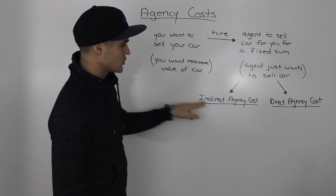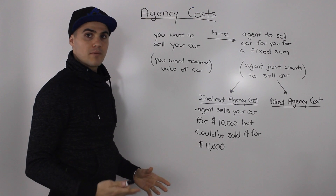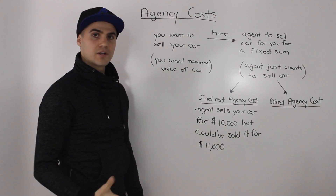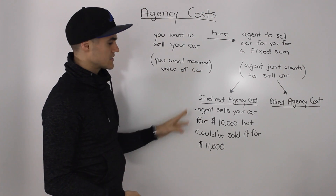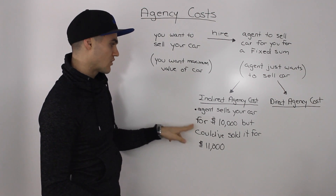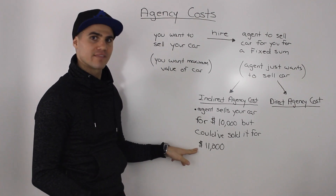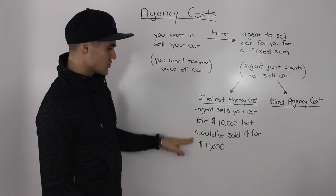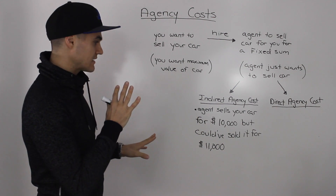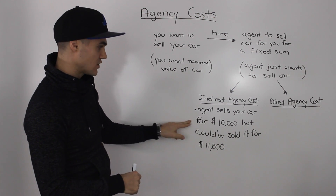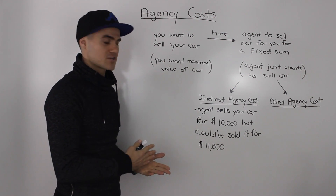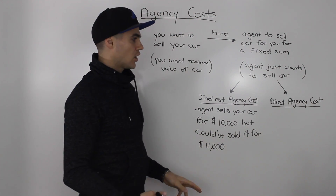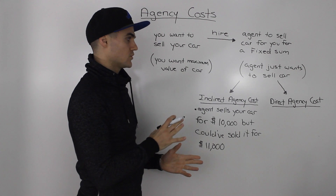There are two types of agency costs: indirect and direct. Indirect agency costs are invisible to the owner. For example, your agent sells your car for $10,000, but he could have sold it for $11,000. To you, that cost is invisible because you don't know enough about the market — that's why you hired an agent. But from an outside perspective, that extra $1,000 left on the table represents a loss to you, and that's an indirect agency cost.